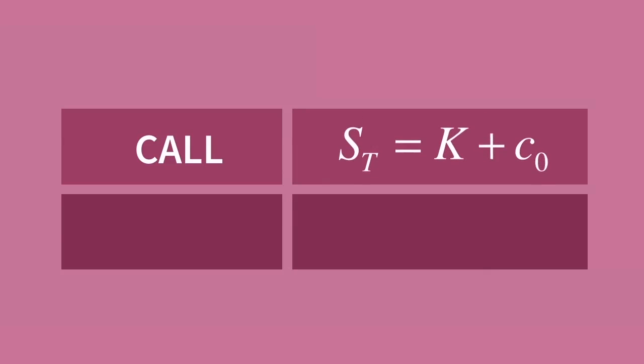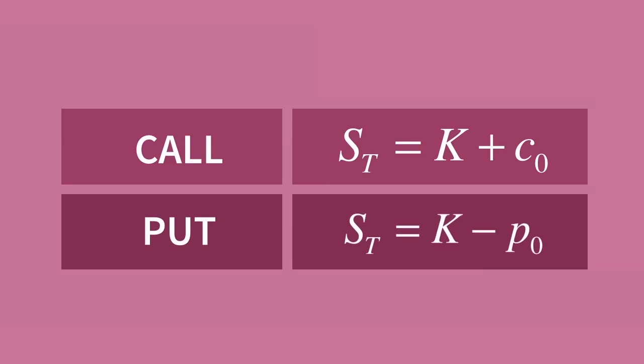Here is the end result: for a call, the breakeven underlying price at expiration is equal to the strike plus the option premium. For a put, the breakeven is at the strike minus the put option premium.